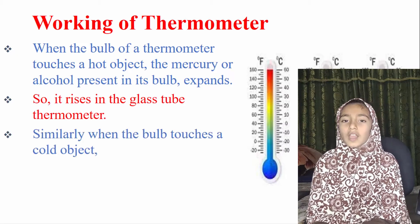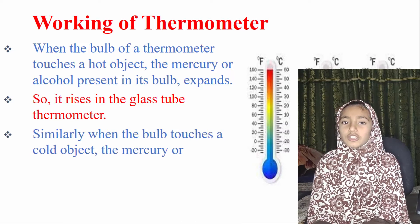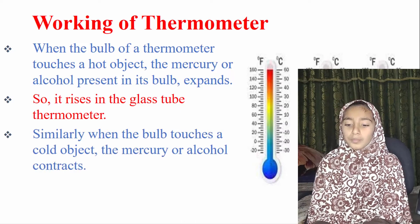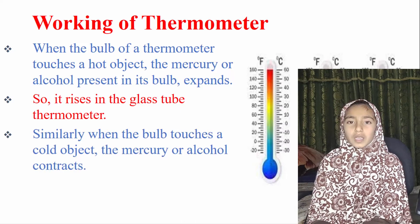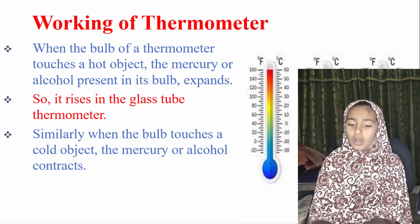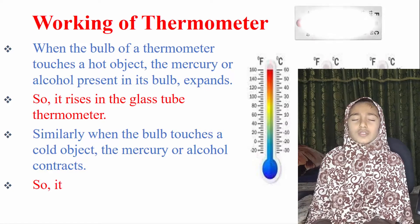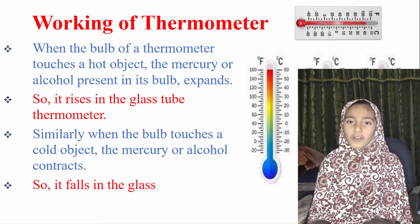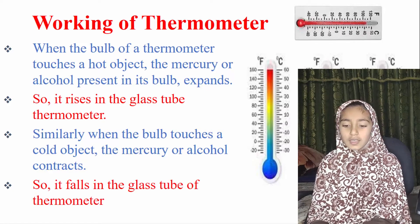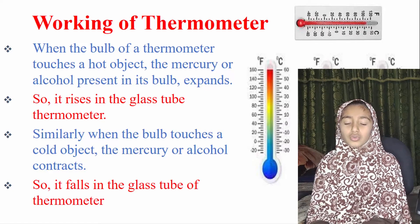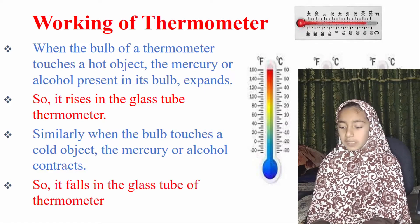Similarly, when the bulb touches a cold object, the mercury or alcohol contracts, so it falls in the glass tube of the thermometer.